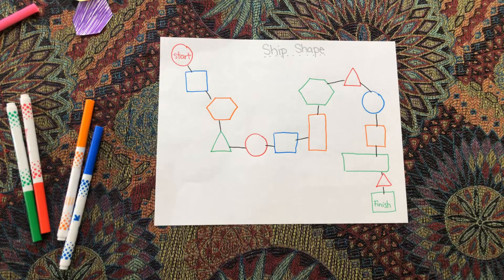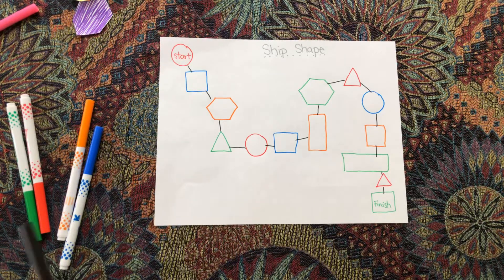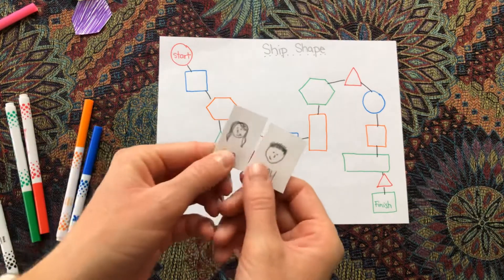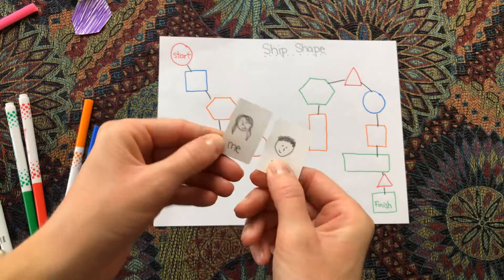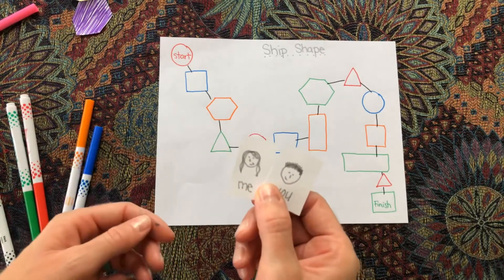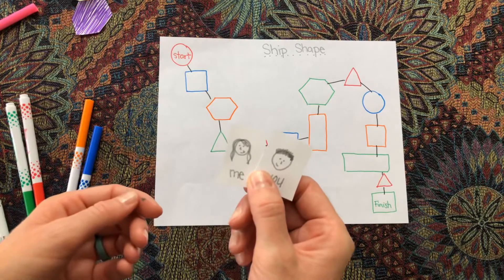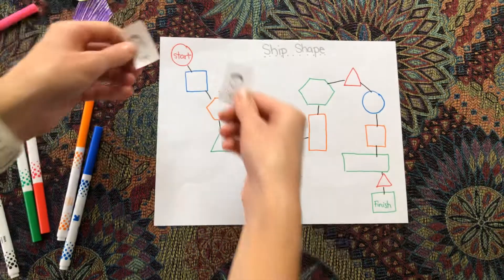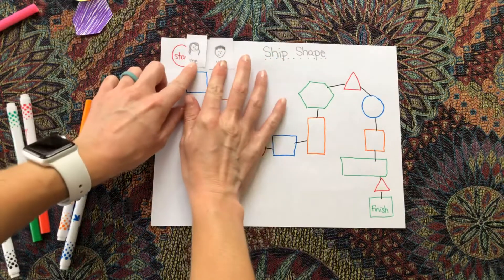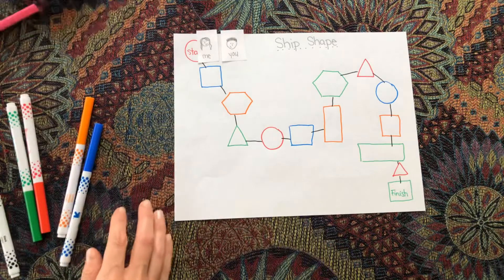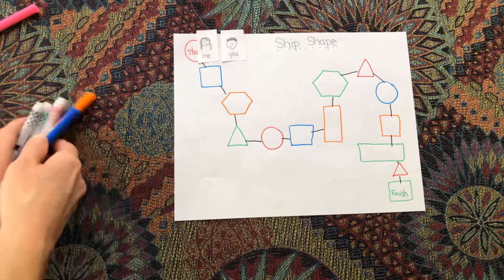After you come up with a path, you need to create your pieces. Now I just made my pieces say me and you. These are my game pieces. You can use things that you have around your house like a paperclip, maybe if they're two different colors, or cereal, whatever you choose. I just drew me and you. I'm going to put them at the start.